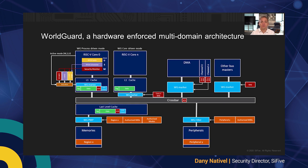A lightweight software security monitor runs in RISC-V machine mode and configures a WorldID assigned to each privilege level. For user mode, it is possible to set up a range of authorized WorldIDs instead of a static value. The OS scheduler then runs in supervisor mode. When switching tasks, it can pick and choose an authorized WorldID for the upcoming task. The transactions are then automatically marked with the proper WorldID starting with the L1 cache, where one task cannot snoop another task's memory or cache line. The last-level cache also checks that a cache line fetched by a core carries the proper WorldID.